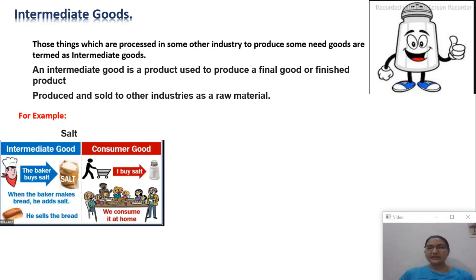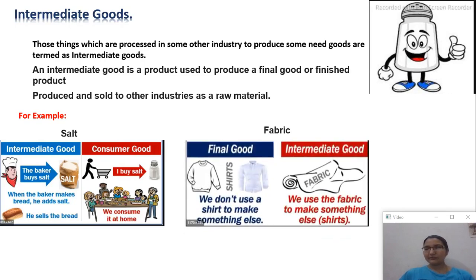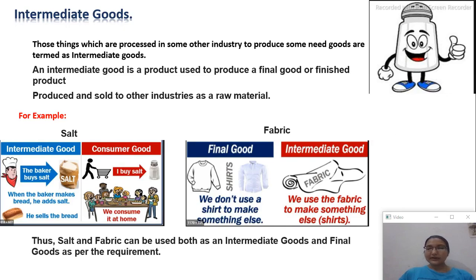Salt is both an intermediate good and a consumer good. Fabric is another example: when fabric is processed through machinery to convert into a shirt, skirt, or dress, it acts as an intermediate good; but fabric sold directly is a final good. Thus, salt and fabric can be used both as intermediate goods and final goods as per the requirement.